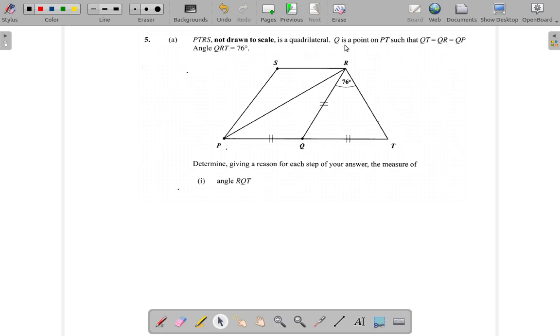Q is a point on PT such that QT equals QR equals QP.